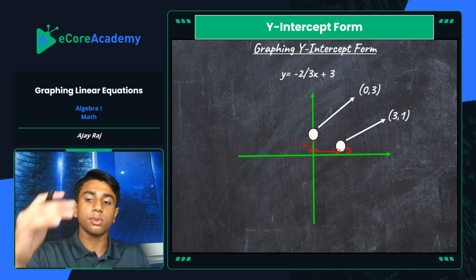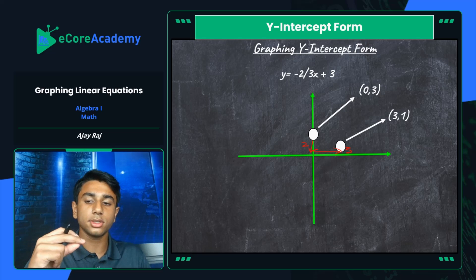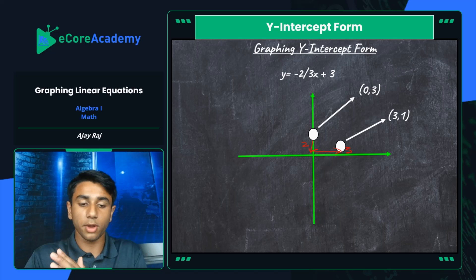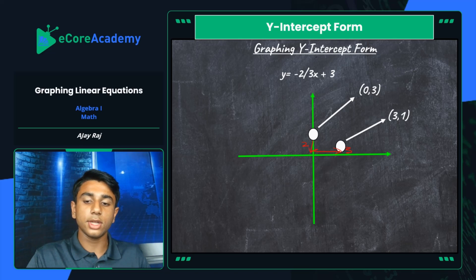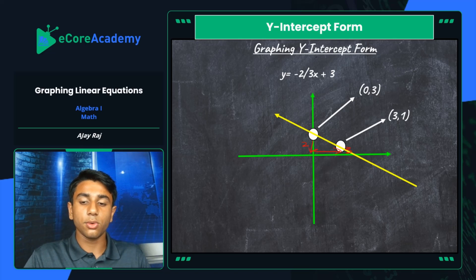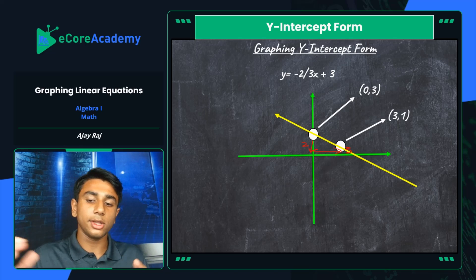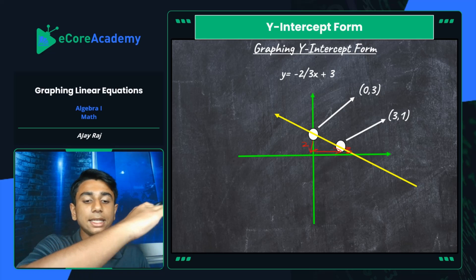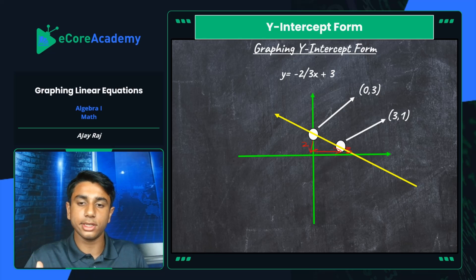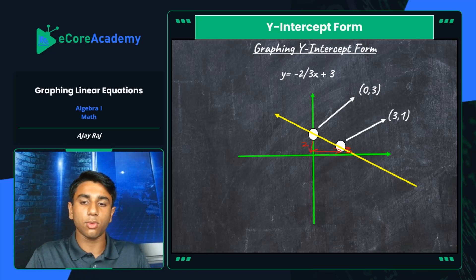So our new point is three comma one because we went down two — that puts us at one for our y-axis — and then we went right three, so our x is three. Now that we've created those two points, we can draw our graph. We've just graphed our line with the two points, and now we draw a line that clearly intersects both points. That's an accurate representation of y equals negative two-thirds x plus three in graphic form.